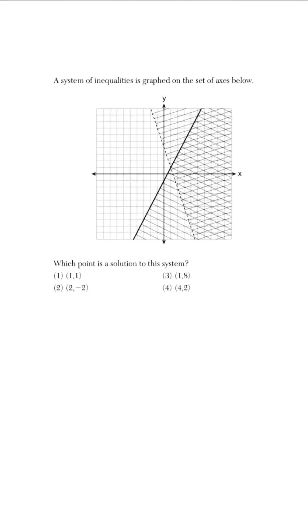With systems of inequalities, we have to understand the different answer choices. There are three shaded regions here. With the first dashed line, this is the solution where you see me drawing the arrows in that direction. Changing to blue, the solution for the solid line is represented with these arrows. What we're looking for is where these two arrows point in the same direction, outlined specifically right here — that's where these two arrows meet.